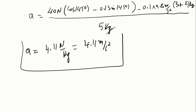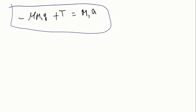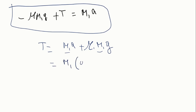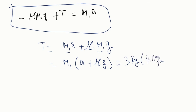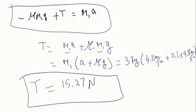To find the tension, we use the equation from object 1: tension equals M1 times acceleration plus μ times M1 times g, which simplifies to M1 times (acceleration + μg). With M1 = 3 kg, acceleration = 4.11 m/s², μ = 0.1, and g = 9.8 m/s², the tension is 15.27 newtons.